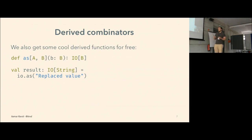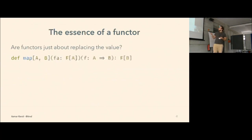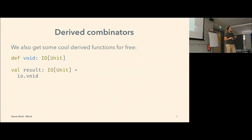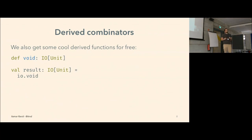And we have the `void` function, which discards the value and keeps the unit value. So these are all very cool combinators, which we can just derive by using the map function.